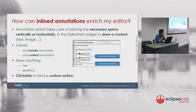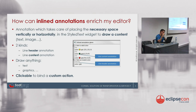So what is inline annotation? The inline annotation is an annotation which takes care of placing the necessary space vertically or horizontally in the StyledText widget. There are two kinds of inline annotation: line header annotation and line content annotation. As you can see in the screenshot, line header annotation shows OK and error status — this annotation is drawn before the line.